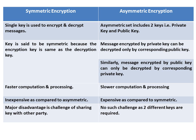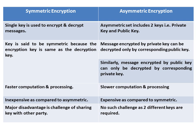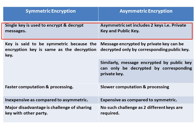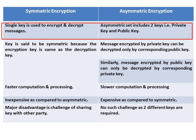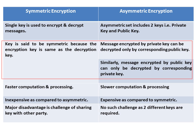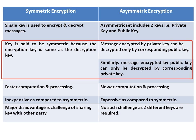Let us understand the difference between symmetric encryption and asymmetric encryption. In symmetric encryption, a single key is used to encrypt and decrypt the message, whereas in asymmetric encryption, two sets of keys are used: one is the private key and another is the public key. A key is said to be symmetric because the encryption key is the same as the decryption key.